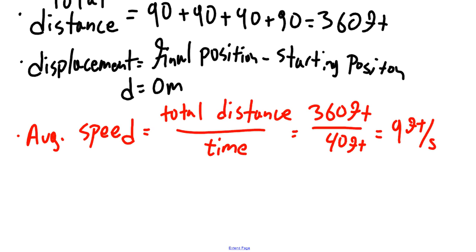Average velocity, though, is something entirely different. So average velocity is defined as follows. Your displacement divided by the time interval being measured.